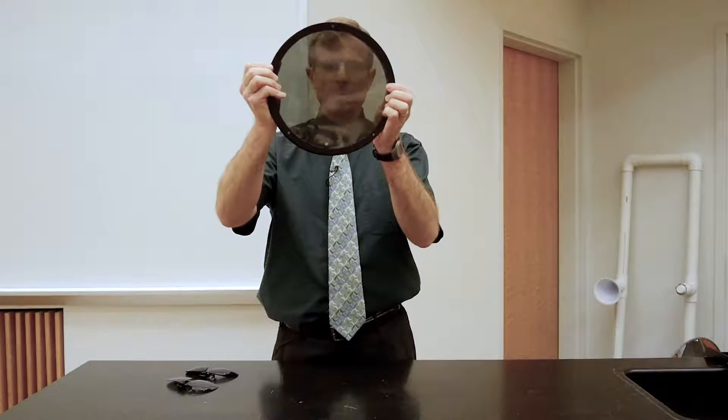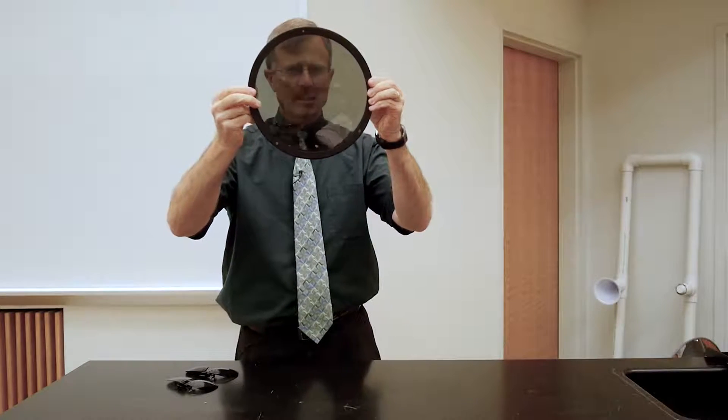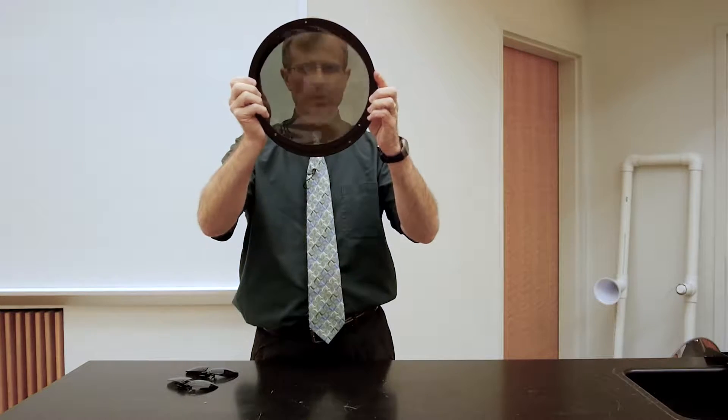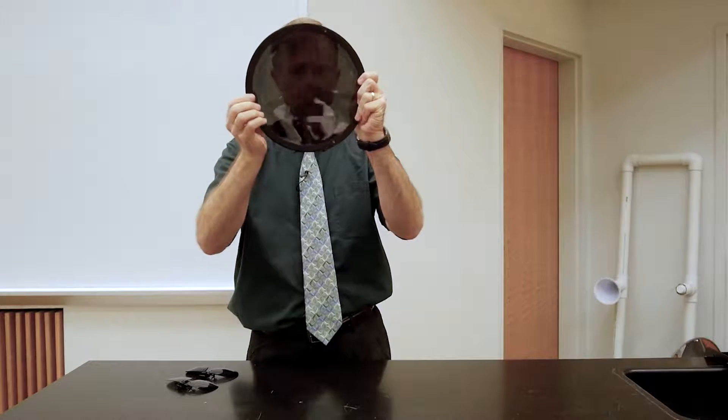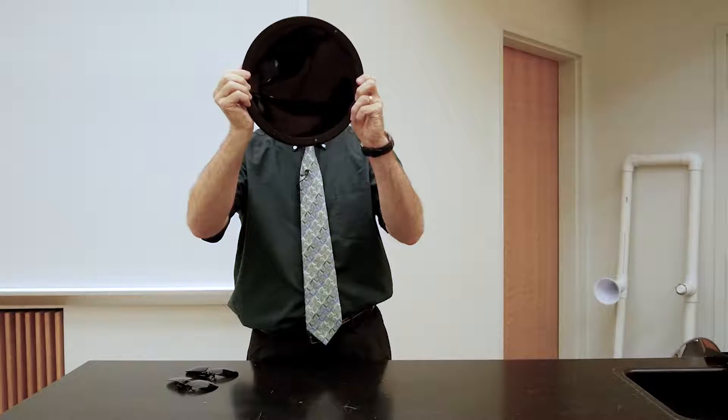If you put two polarizers together and their polarization directions are lined up, then most of the light passes through. Whereas if you rotate them 90 degrees, you can cut out almost all of the light.